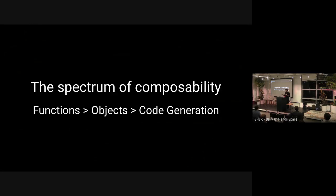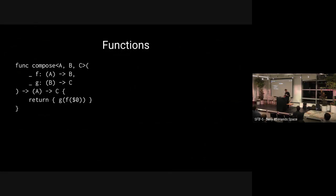There's definitely a spectrum here, and it's useful to keep in mind — knowing why you might prefer one type of composition over another. With that definition in place, let's go through a zoo of composability to see all the wild types of composition that exist. Functions are composable because you can write this generic function that takes an A-to-B and B-to-C and returns an A-to-C.